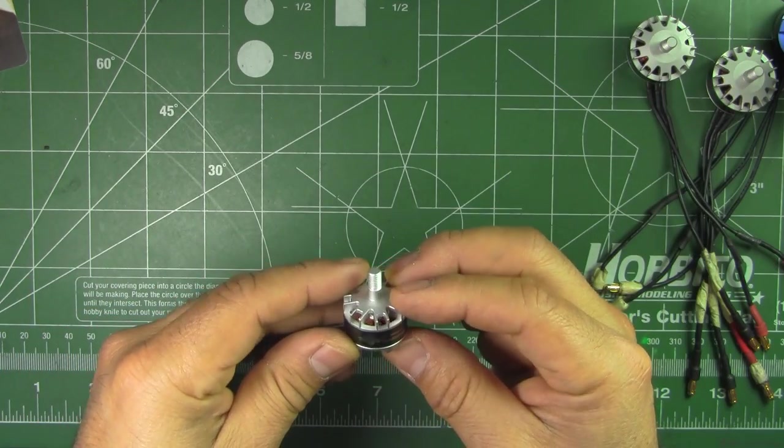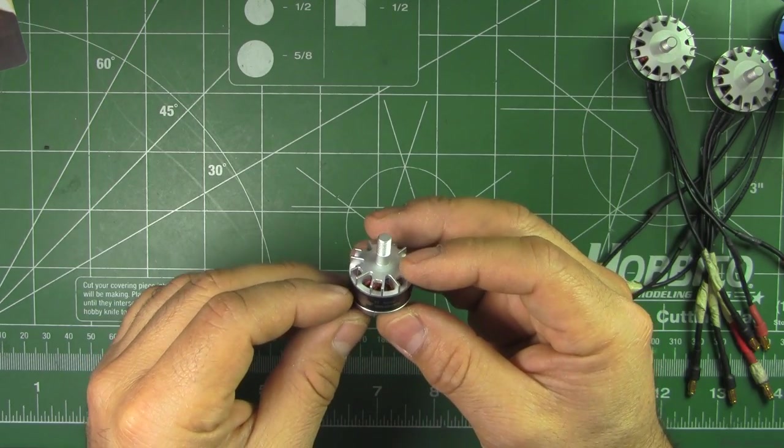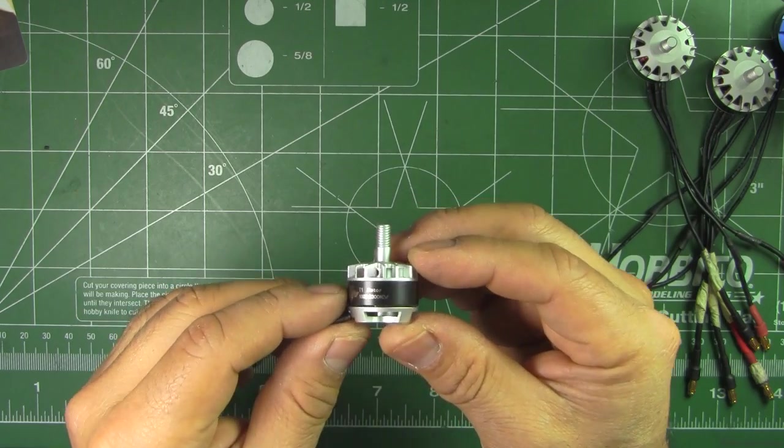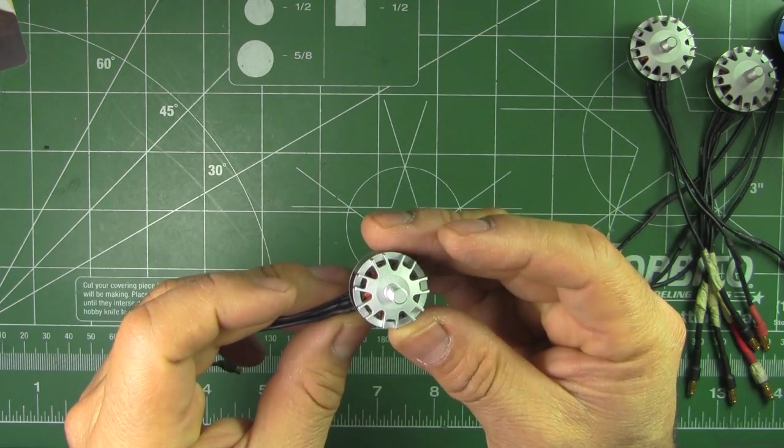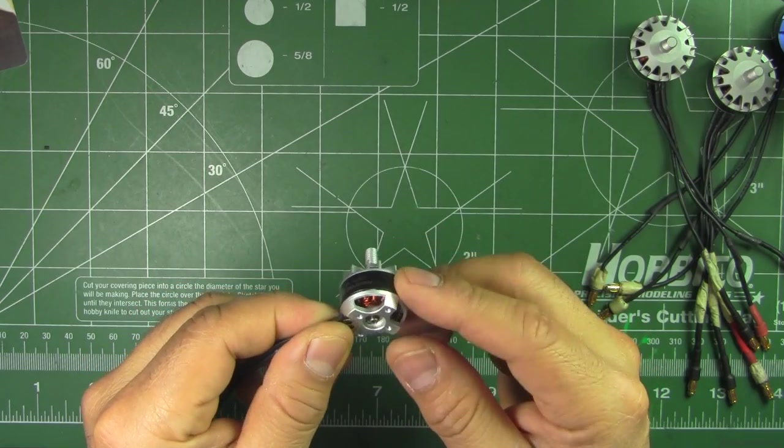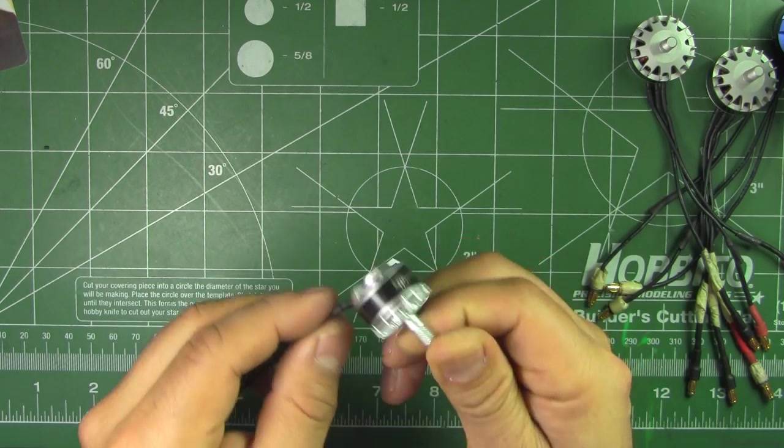And a motor size that I haven't tested in a while is the 1806 2300 KV. I don't think a lot of people are using the 1806 these days, but it'll be interesting to see what it puts out.